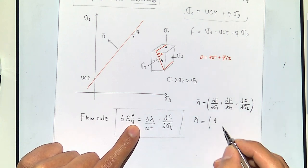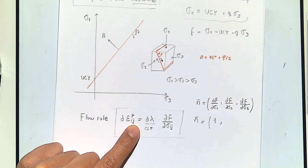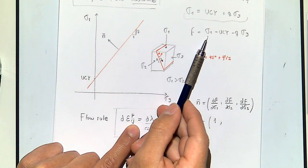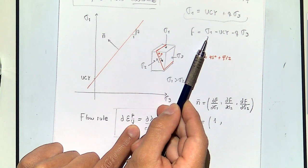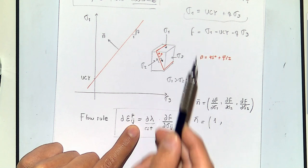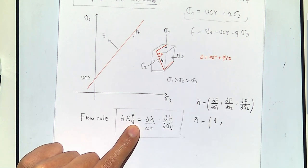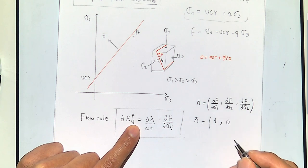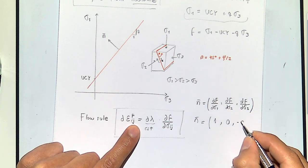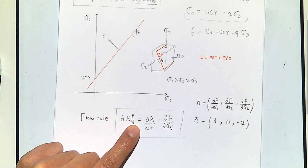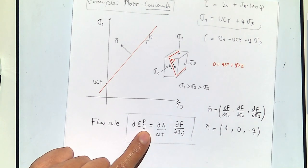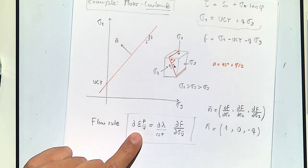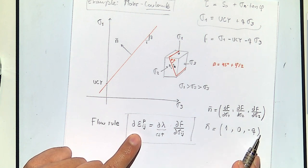Let's see what this looks like for the Coulomb surface. The partial derivative of F with respect to σ₁ is 1. With respect to σ₂ it is 0. With respect to σ₃ it is negative q.